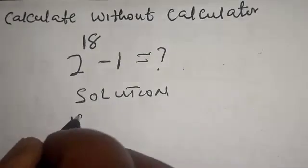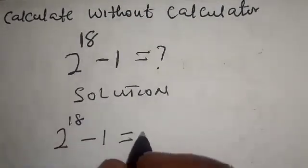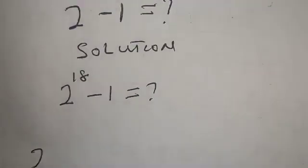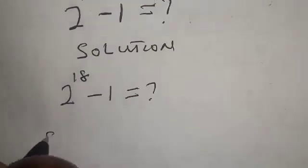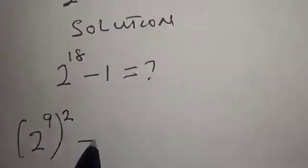2^18 - 1 equals what? And 2^18 is the same thing as (2^9)^2 - 1.